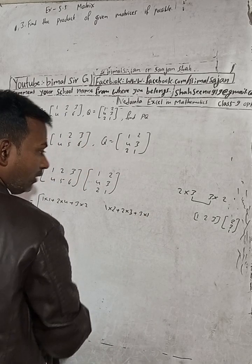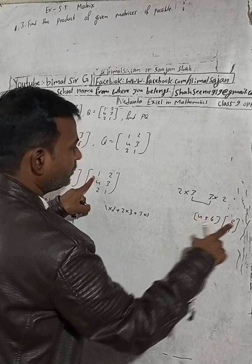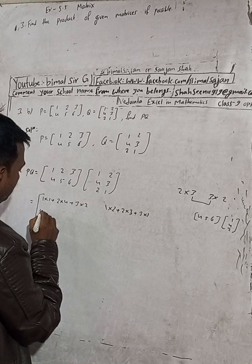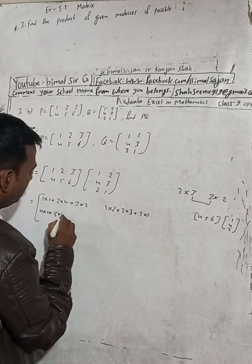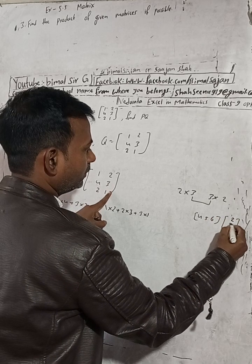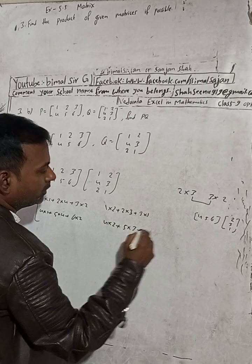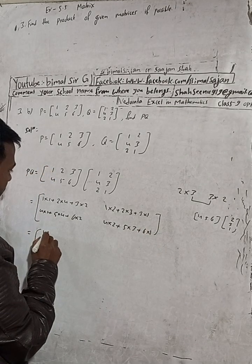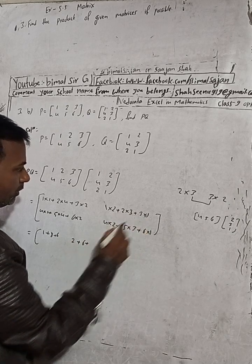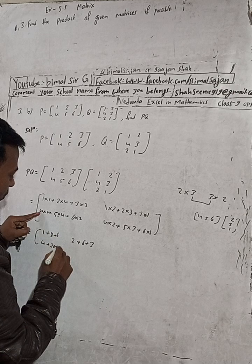Now change to the second row of P, which is 4, 5, 6. For the first column: 4×1 plus 5×4 plus 6×2, and for the second column: 4×2 plus 5×3 plus 6×1. Computing: 1+8+6 equals 15, and 2+6+3 equals 11 for the first row.